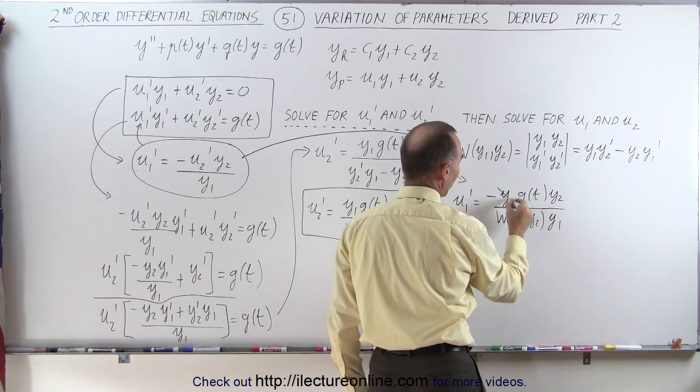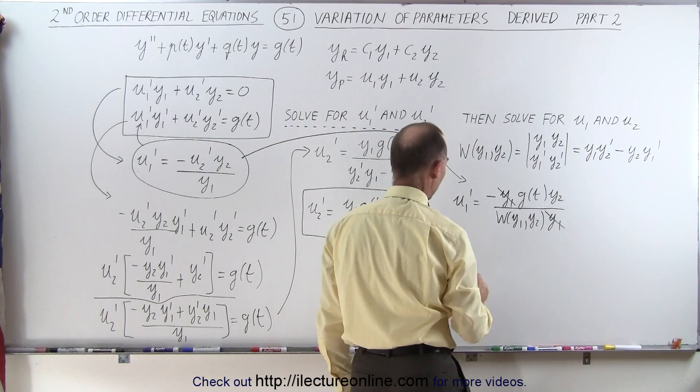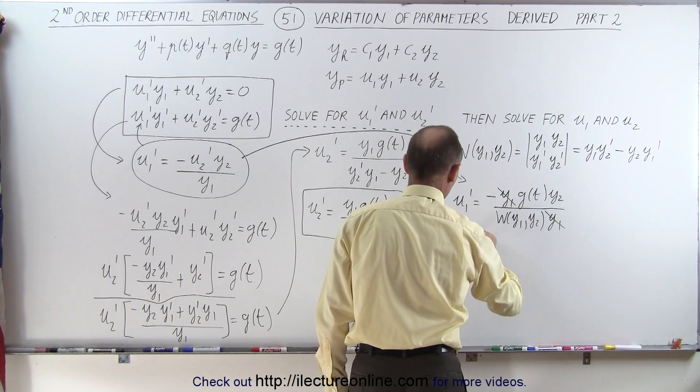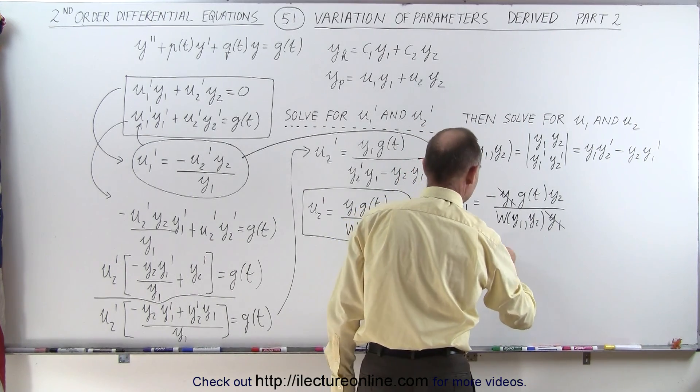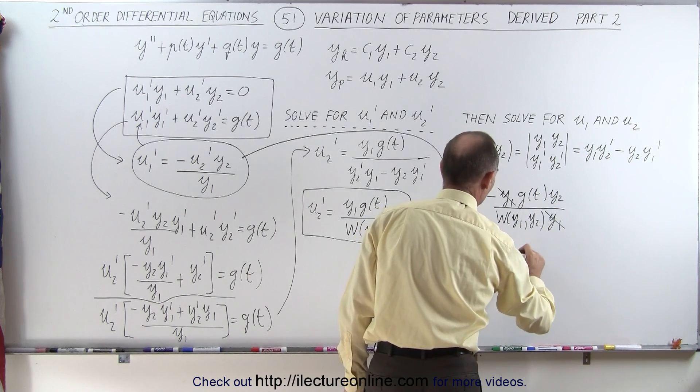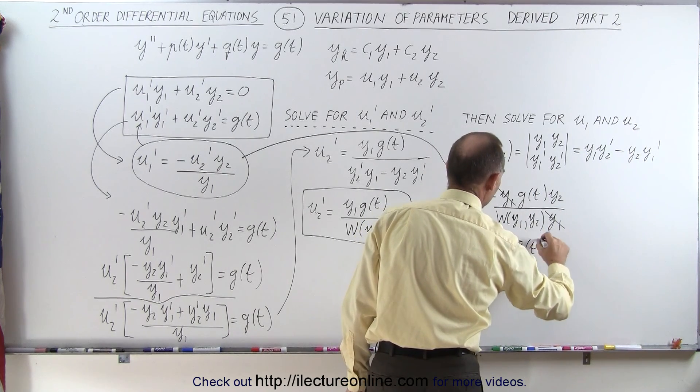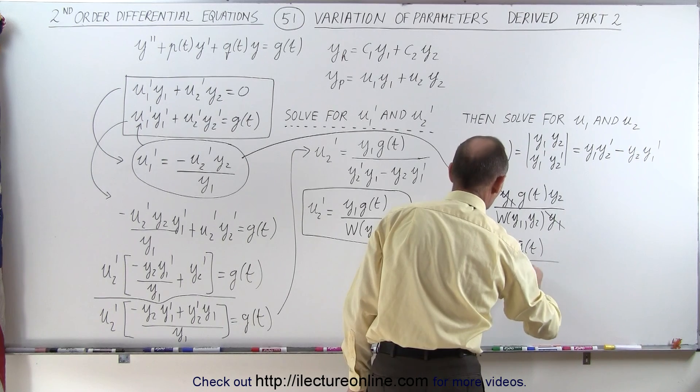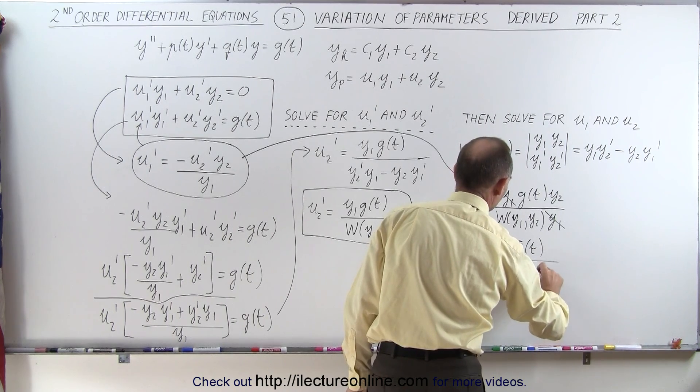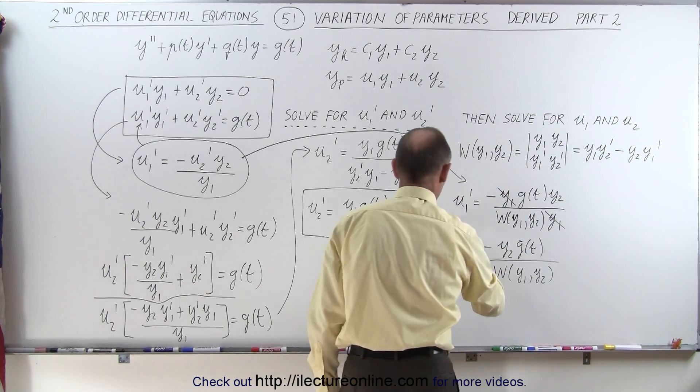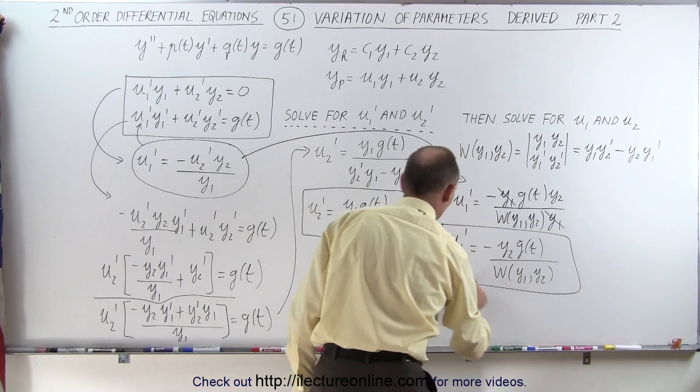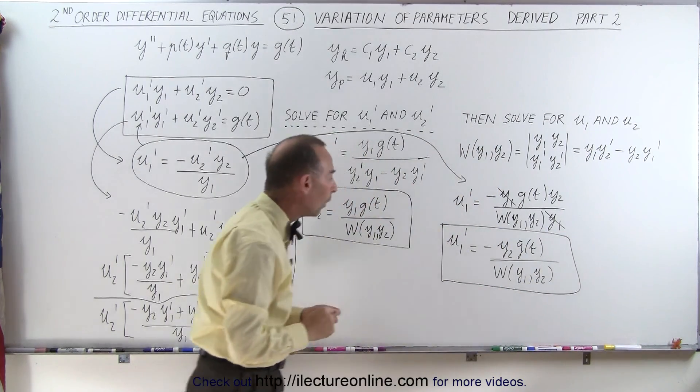And notice that this y1 will cancel out with this y1, which means that u1' is going to be equal to the negative of, and I'll write the y2 first, y2 times g of t divided by the Wronskian of y1 and y2. And there, we now have an equation for u1'.